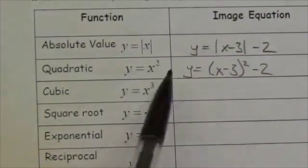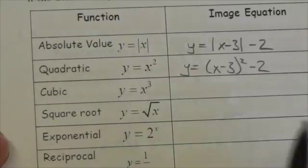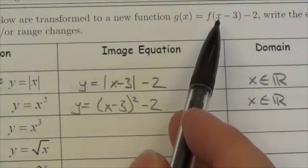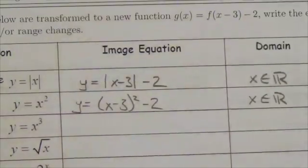to the cubic function here, y equals x cubed. Now, what's going on inside the function here in the notation? I'm taking and replacing what should be an x with x minus 3.